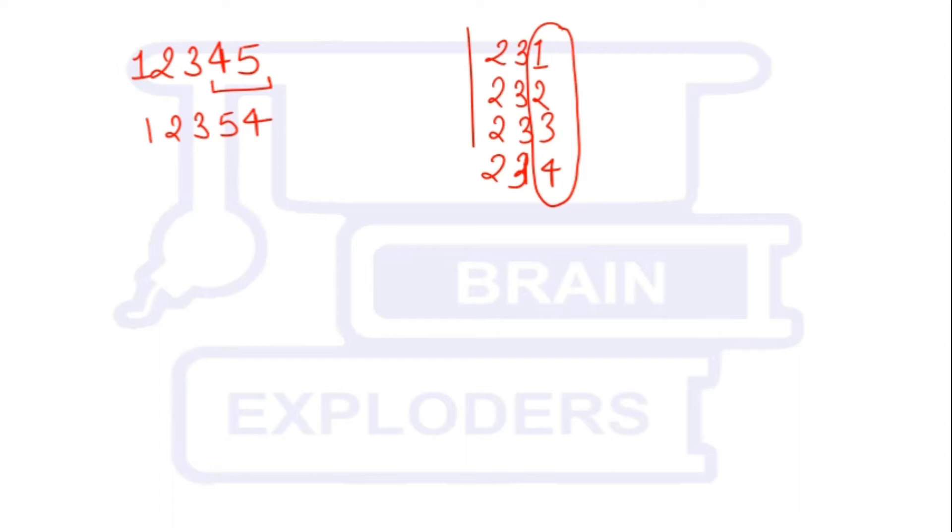We can see that using these last two numbers we cannot increase its value more. Obviously, because with the help of these two numbers only two permutations are possible. So this time we will have to take the help of last three values. If we increase the value of this 3, we will write the number which is greater than 3 but is minimum in these two. Greater than 3 but minimum. So this number is 4.